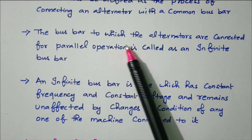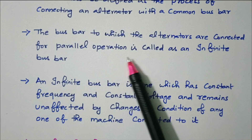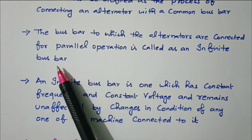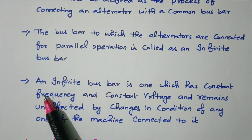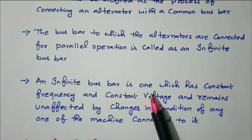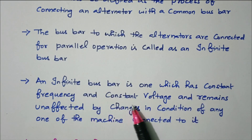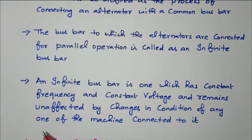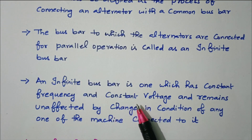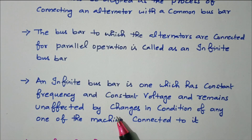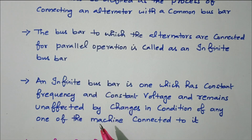The bus bar to which the alternators are connected for parallel operation is called an infinite bus bar. An infinite bus bar is one which has constant frequency and constant voltage, and remains unaffected by changes in condition of any one of the machines connected to it. The performance of the bus bar should be unaffected — that is called an infinite bus bar.